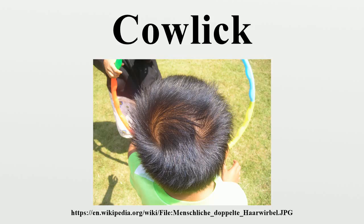The most common site of a human cowlick is in the crown, but they can show up anywhere, including the front and back of the head. The term cowlick dates from the late 16th century, when Richard Haydock used it in his translation of Lomaso: 'The locks or plain feeks of hair called cowlickous are made turning upwards.'